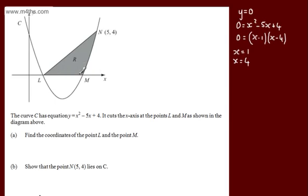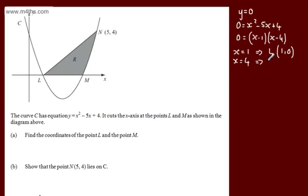Simply by looking at the graph, we can see that when x equals 1, that gives us L. So the coordinates of L are (1, 0). Simply putting x equals 1 is not what they're asking for — they're asking for the coordinates. We've got M and we can say that's (4, 0).